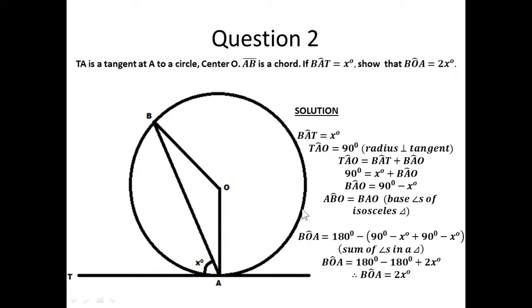The sum of these two angles is 90 minus X plus 90 minus X. So, 90 plus 90 gives us 180, and minus X minus X gives us minus 2X. If you expand the bracket, you get 180 minus 180 plus 2X. So, 180 minus 180 gives us zero, meaning angle BOA equals 2X. That is, the central angle is 2X.